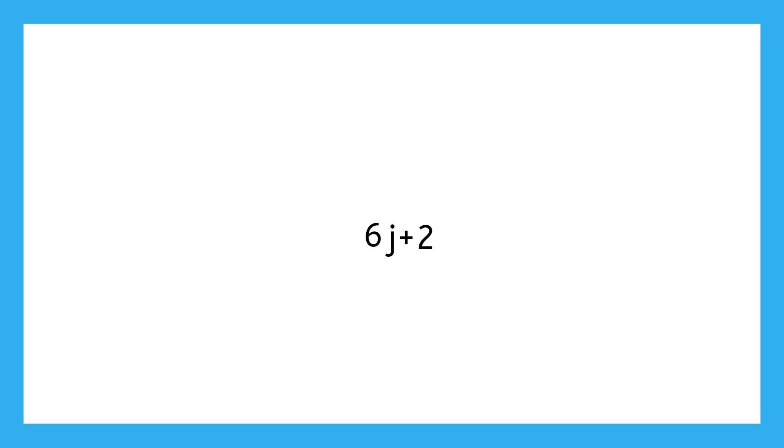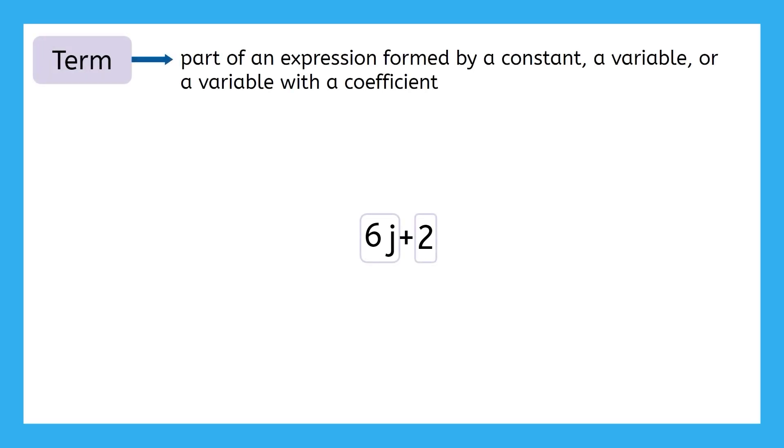If we look at our algebraic expression of 6J plus 2, we have two terms here: 6J and 2. A term is a part of an expression formed by a constant, a variable, or a variable with a coefficient. There could be more than one variable too, but don't worry about that for now.